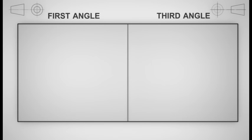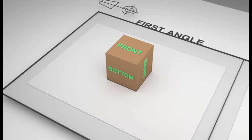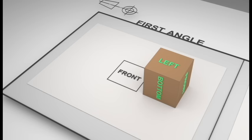We're going to look at first angle first, and what I want you to think of is having the actual object you're going to draw on top of the paper itself. All you're going to do is imagine yourself rolling the object in the direction of whatever view you're looking to create, and what you see from the top down is what you draw.